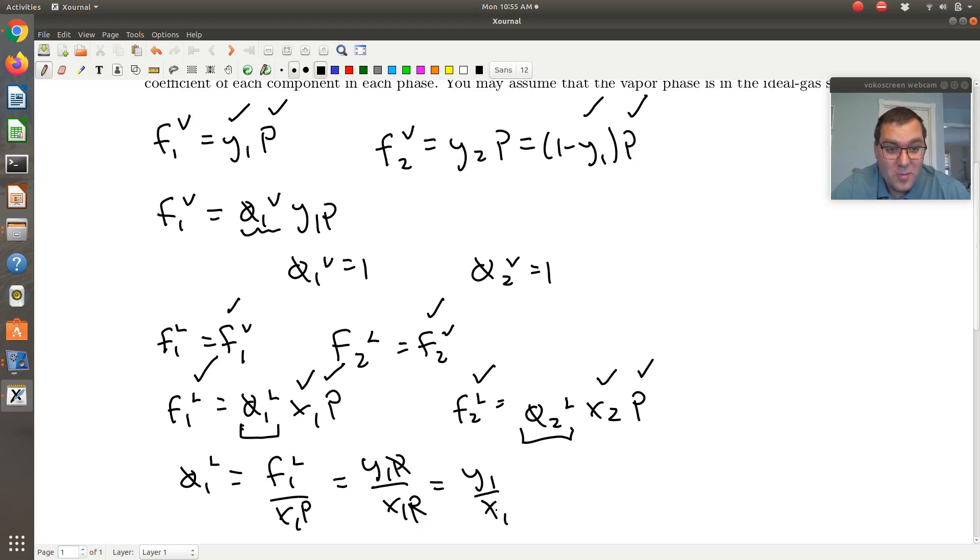So if I think about my TXY or PXY phase diagram, let's think about our PXY, so that temperature is constant, and then I draw an isobar for my system in coexistence. If I were to follow that isobar and read out the vapor composition and liquid composition, the ratio of those two is just equal to phi1V. That's pretty cool.